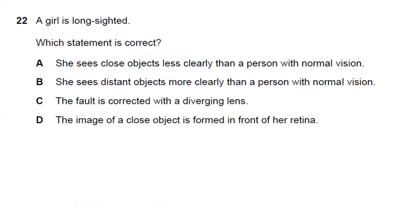Question twenty-two: a girl is long-sighted. Which statement is correct? She sees close objects less clearly than a person with normal vision — yes, this happens in long-sightedness. The fault is corrected with a converging lens, not a diverging lens. Answer A is the best answer.